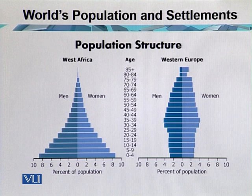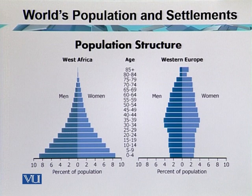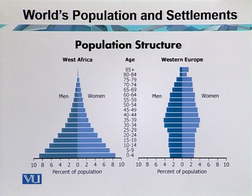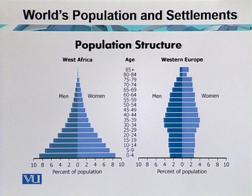Similarly, when we look at the pillar shape of Western Europe, it is not broad-based — the number of births is low. Up to the age of four, population is low; even up to the age of fifteen, we find less population. Whereas in the central part, we have maximum population — the youth population between twenty to forty-five or fifty years of age, where we have the maximum working-class age group. This is because many people have migrated to Western European countries for work. The birth rate is low, and those less than fifteen years of age are about ten percent of the total population.